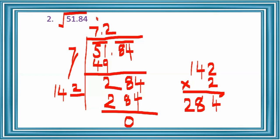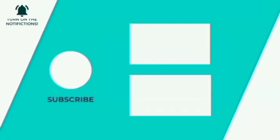So the square root of 51.84 is 7.2. Hope it is clear. We can continue in the next class. Thank you.